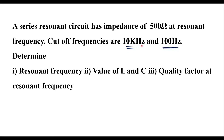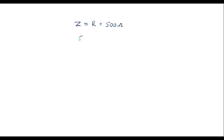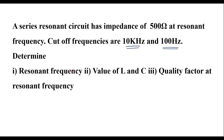Here, 10 kilohertz is the higher value. Therefore, we should consider this as the upper cut-off frequency. So the upper cut-off frequency F2 is 10 kilohertz and the lower cut-off frequency F1 is 100 hertz. With the help of this data, we need to calculate resonant frequency, value of L and C, and quality factor at resonant frequency.